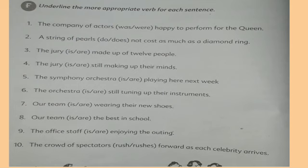The jury is made up of 12 people, and the jury are still making up their minds. The symphony orchestra is playing here next week — orchestra as a group uses a collective noun. Then, the orchestra are still tuning up their instruments. The team is wearing their new shoes. Our team is the best in school. The office staff is enjoying the outing. The crowd — the spectators rush forward as each celebrity arrives.